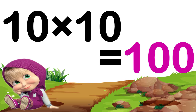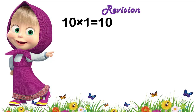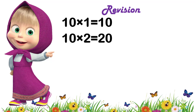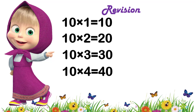10 10's are 100. Now children, let's revise the table once again. 10 1s are 10, 10 2s are 20, 10 3s are 30.